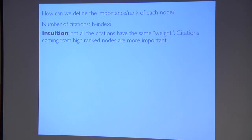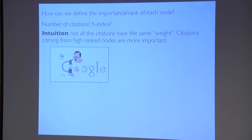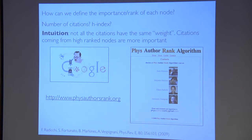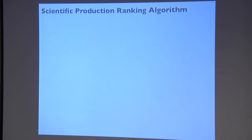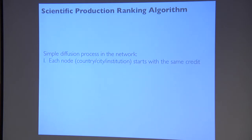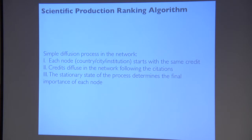The intuition is: not all citations have the same importance. A citation from a big institution or a prominent researcher might be more important than others. This is the same thing that Google does when mapping the importance of pages, and at the author level this is what Santo and collaborators did with the physics author ranking algorithm. We extend this for our purpose and propose a scientific production ranking algorithm that works like Google PageRank — a simple diffusion process where each node starts with the same level of credit, credit diffuses through the network, and at the stationary state you obtain the importance of each node.